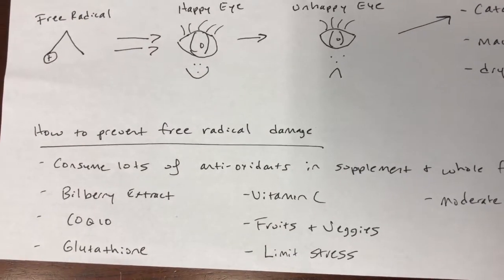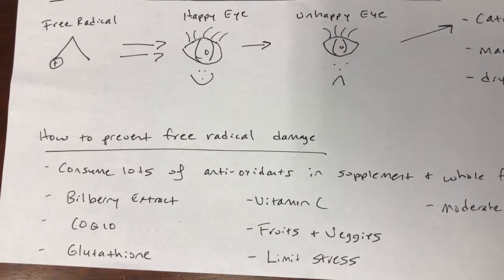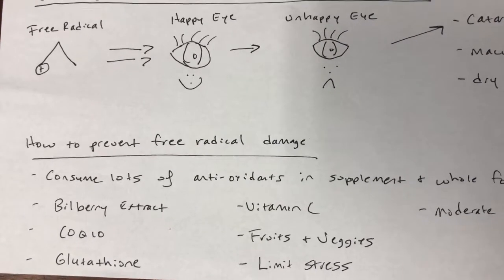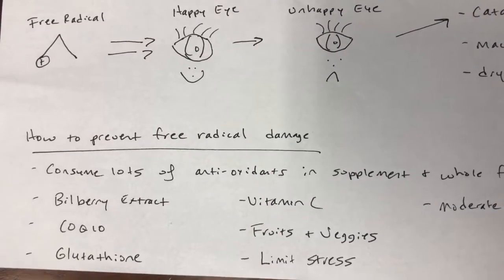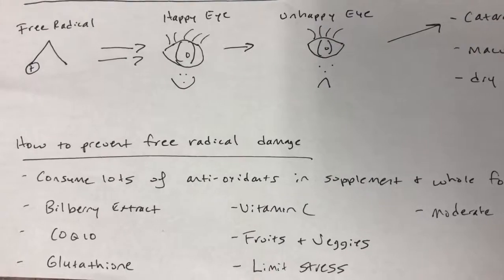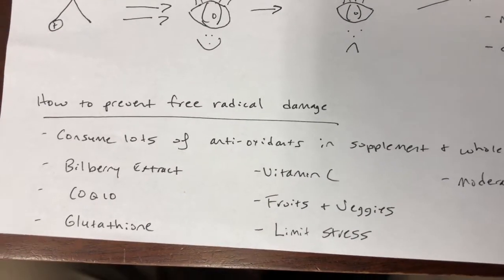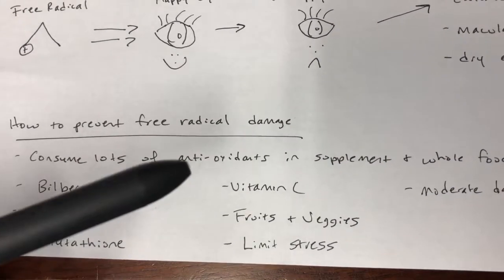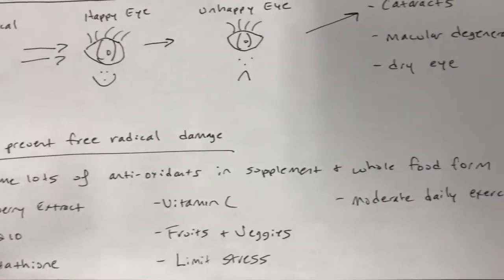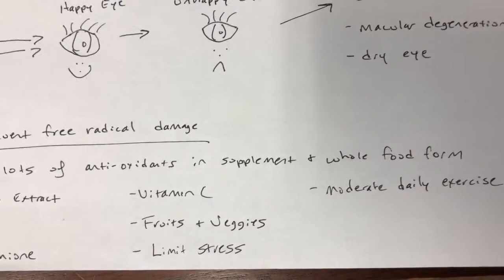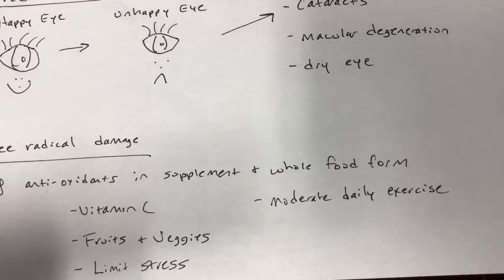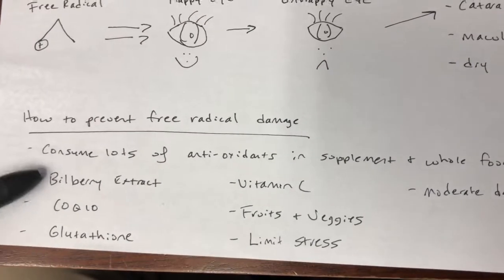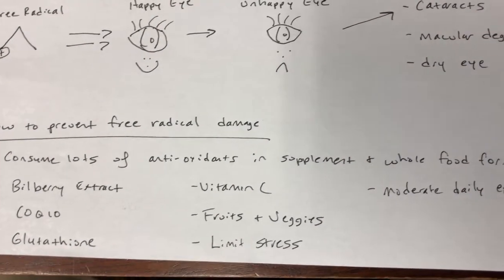You hear about these things called antioxidants. An antioxidant, instead of allowing the free radicals to attach to your eyes, actually attaches to the free radical itself and basically takes on the damage. Some really good antioxidants for your eyes are bilberry extract, CoQ10, glutathione, and vitamin C. You can get all of these things from fruits and veggies, limiting your stress, and daily exercise is really good too.